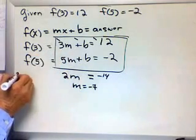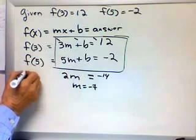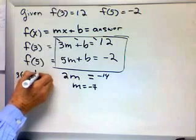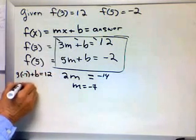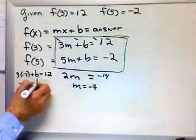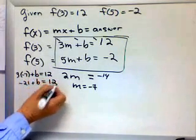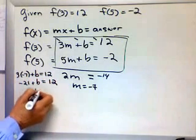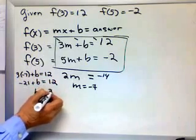So let's go back here. 3 times minus 7 plus b equals 12. Negative 21 plus b equals 12. b equals, add 21 to both sides, 33.